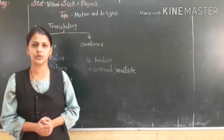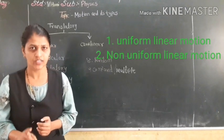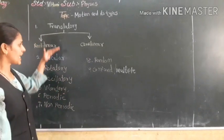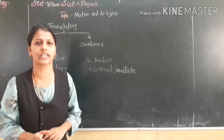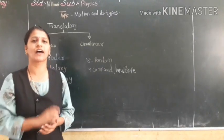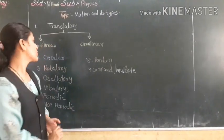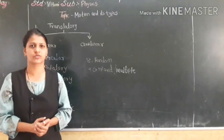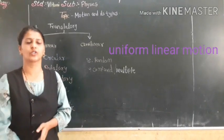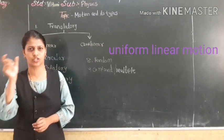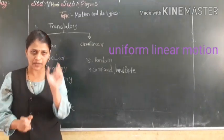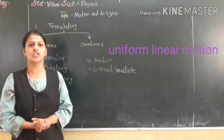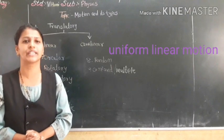Translatory motion is classified into two types: uniform linear and non-uniform linear. In the words, the definition is hidden. Uniform means the object moves at the same distance in the same time — that is called uniform linear motion.